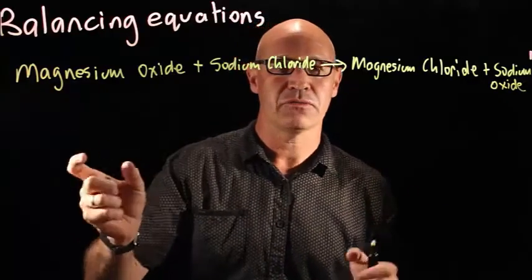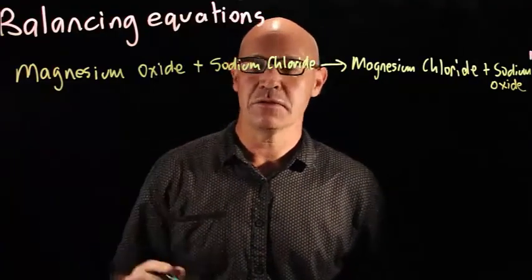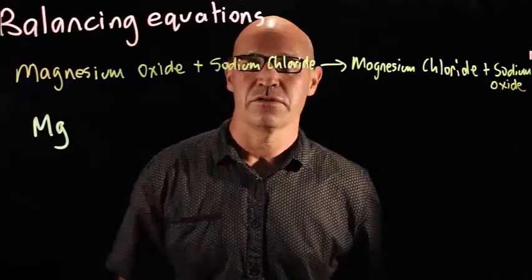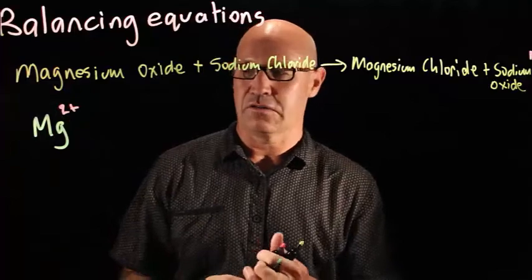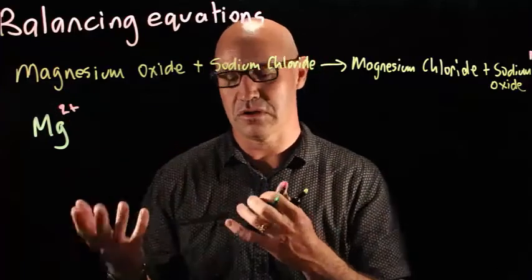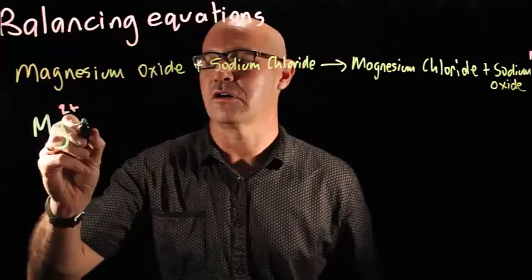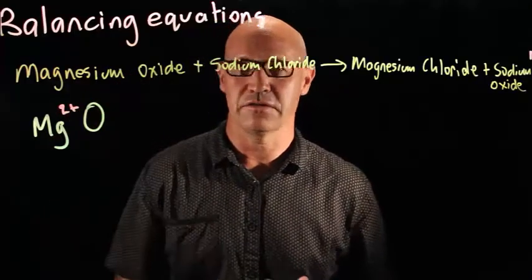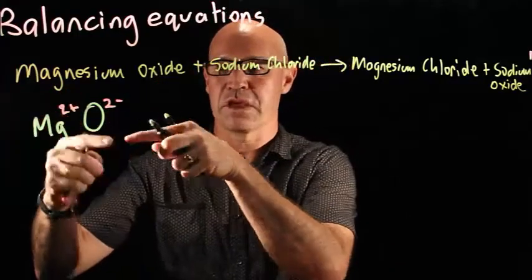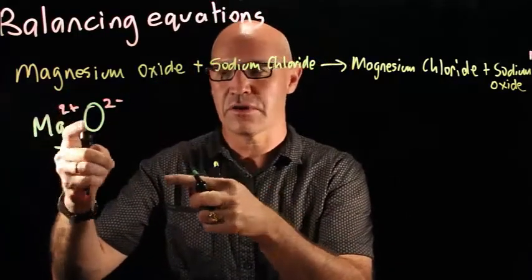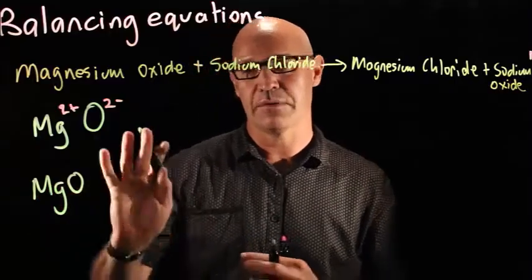First of all, we need to write down our correct molecular formulas, and we do that with our crossing over method. So we've got magnesium oxide. Write down the ions with their charge. You use your periodic table to work that out. Magnesium is in group 2, so it's a 2+ ion, and oxide is in group 6, so it's a 2- ion. We just do our crossing over, but these are going to cancel each other out, so we've just simply got MgO. That one is straightforward.